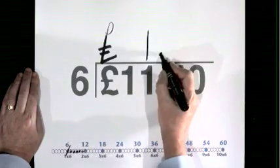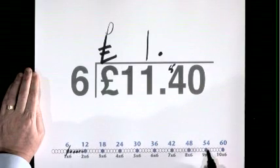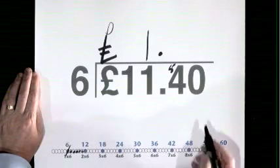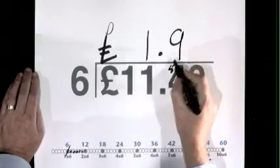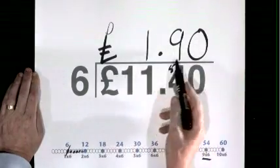Decimal point. 6 goes into 54, 4, 9 times. 6 goes into 0, 0. £1.90.